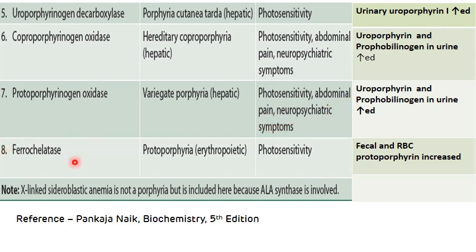Deficiency of ferrochelatase leads to erythropoietic protoporphyria, which is the most common type of porphyria seen in children. The main signs and symptoms are photosensitivity, and there is an increased level of fecal and RBC protoporphyrin. This covers the major findings seen in various types of porphyria.